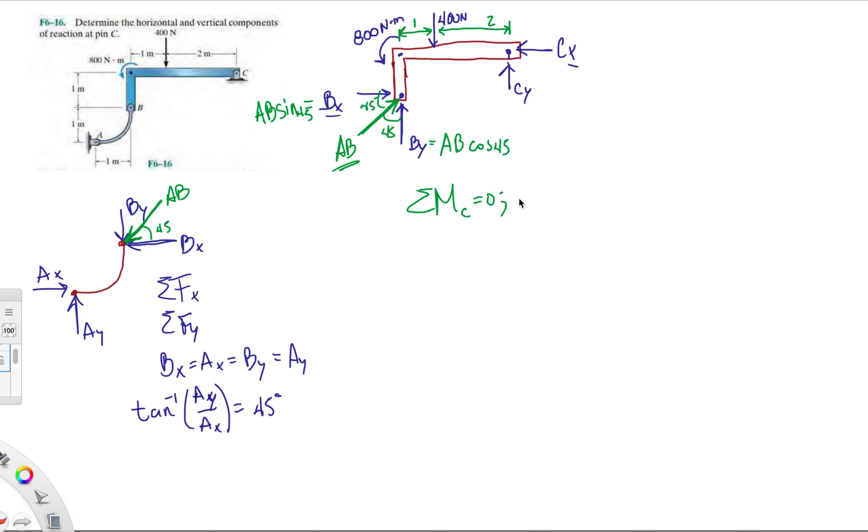So this moment about C is going to be 400 times 2, and this is trying to make it go counterclockwise, plus 800 because of this. And then we're going to have BX just pushing it counterclockwise, so it's going to be AB sine 45, and then what distance? We have it as one meter, so times one.